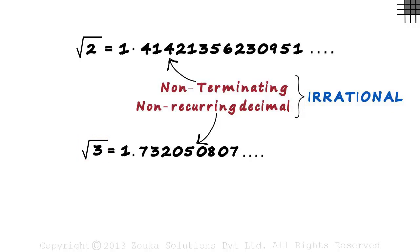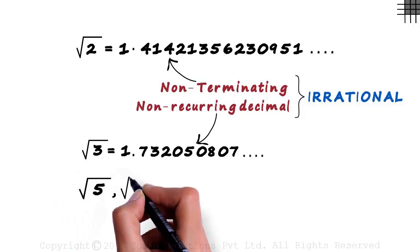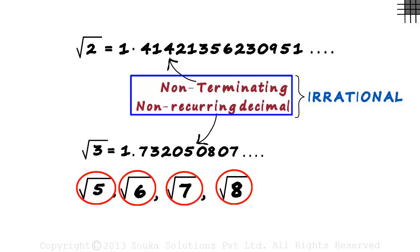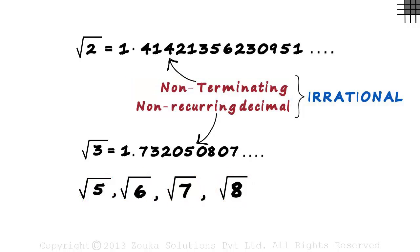You can try calculating the values of root 5, root 6, root 7 or root 8. You will find that all of them result in non-terminating, non-recurring decimals. But wait! Root 9 equals 3.